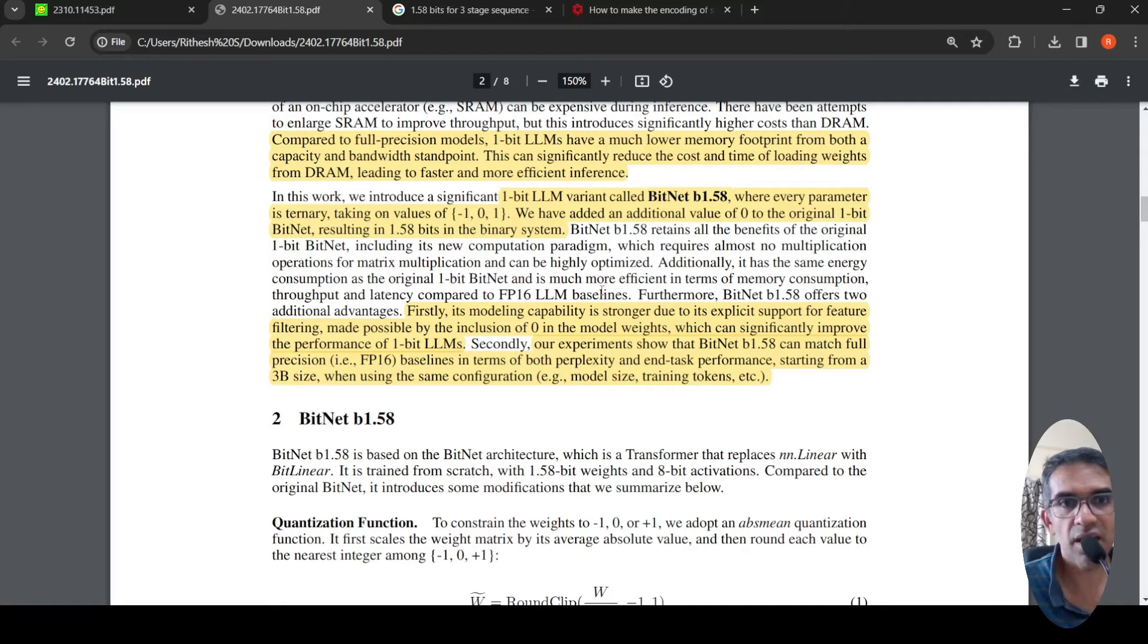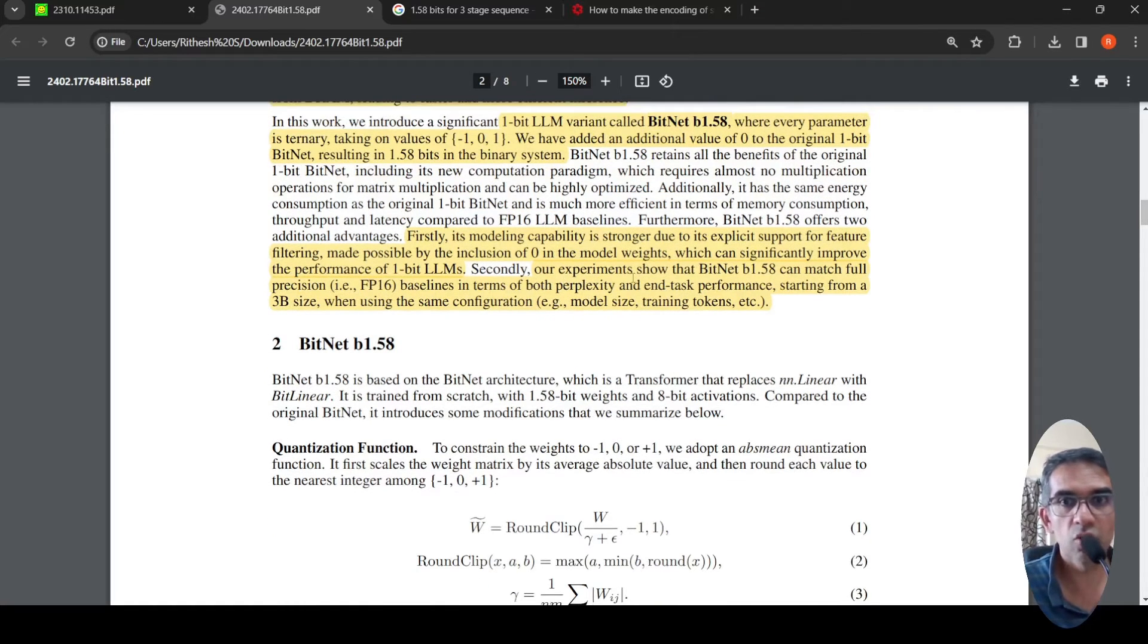So this particular model offers all benefits of the original one bit BitNet. Additionally, it has same energy consumption also same to one bit BitNet and it gives performance similar to your 16 bit precision LLMs. That is what they are saying over here. And because of introducing of this value zero, the modeling capability is stronger because you can do feature filtering because of the inclusion of value zero in the model weights.